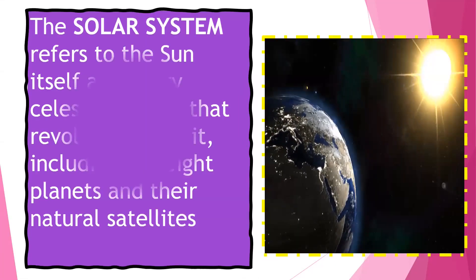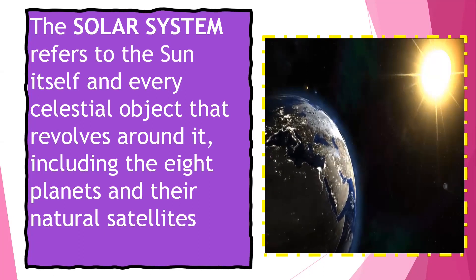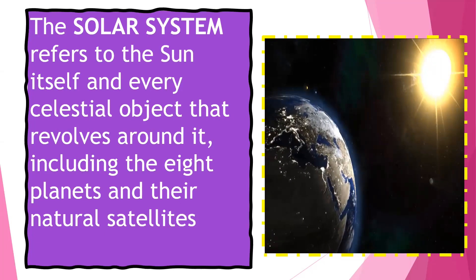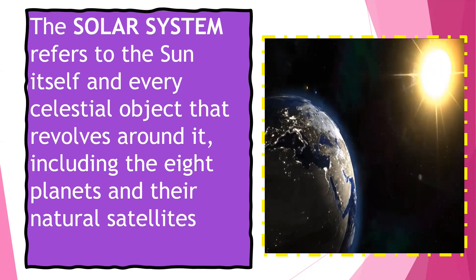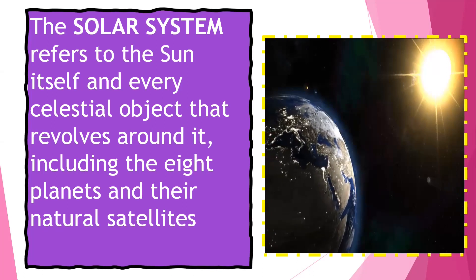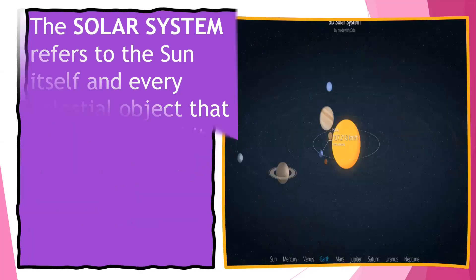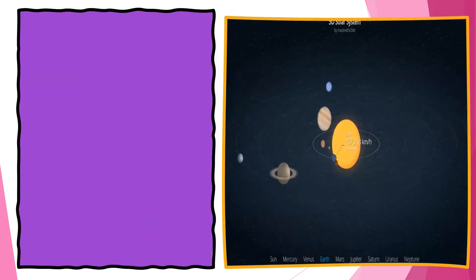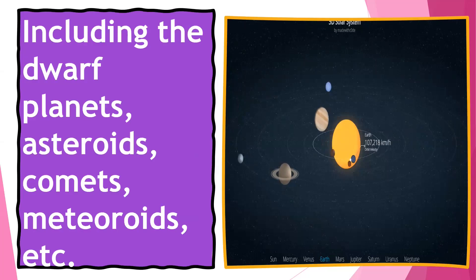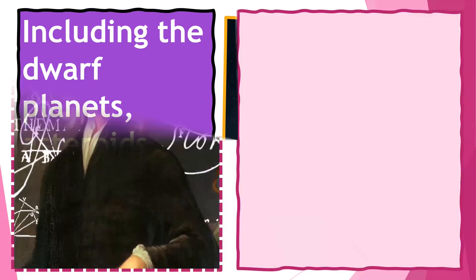The solar system refers to the sun itself and every celestial object that revolves around it, including the eight planets and their natural satellites, including the dwarf planets, the asteroid, the comets, the meteoroids, and some others.